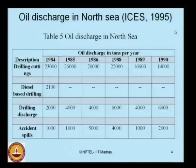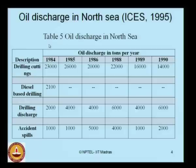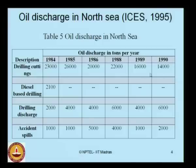Let us look at oil discharge as one of the important pollutants responsible for marine pollution, using data from the North Sea sourced from ICES 1995. The table discloses oil discharge in the North Sea in approximate figures, looking at discharge in tons per year from 1984 to 1990. The discharge happens from drilling cuttings, diesel-based drilling, drilling discharges, and accidental oil spills.